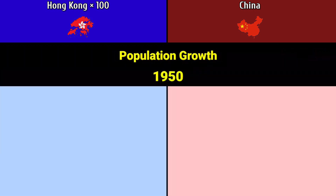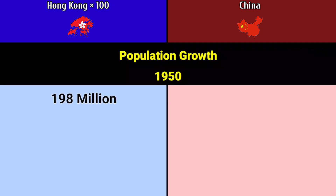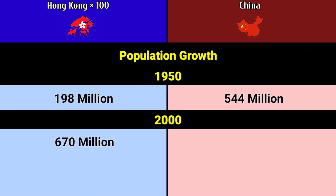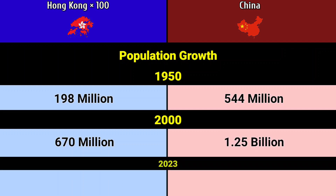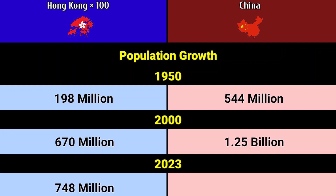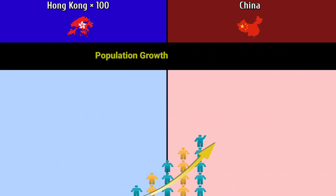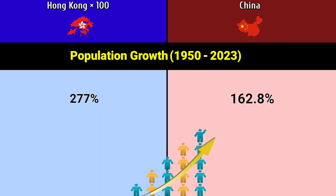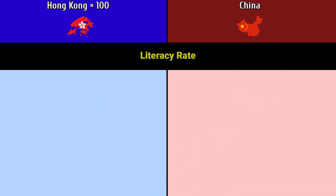Population growth: in 1950, Hong Kong 198 million, China 544 million; 2,670 million and 1.25 billion. In 2023, Hong Kong 748 million, China 1.42 billion. Population growth between 1952 and 2023: Hong Kong 277%, China 162.8%.